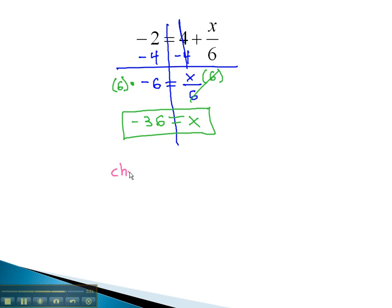We can verify this solution by checking our answer. Plugging the negative 36 in for x in the original problem, which was negative 2 equals 4 plus x, which is negative 36 over 6. Let's simplify the right side and see if we really do get negative 2. First, we divide, so we have 4 plus negative 36 divided by 6 is negative 6.